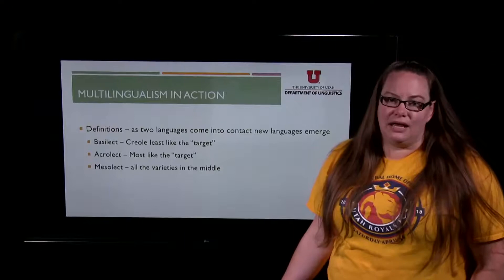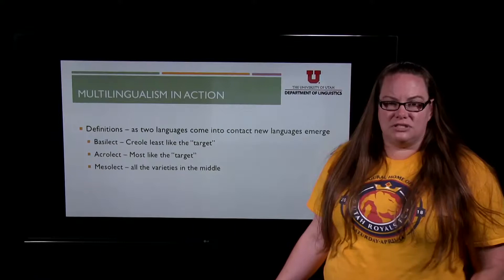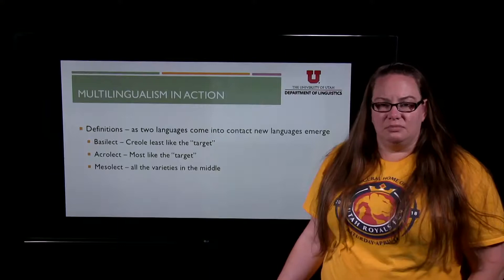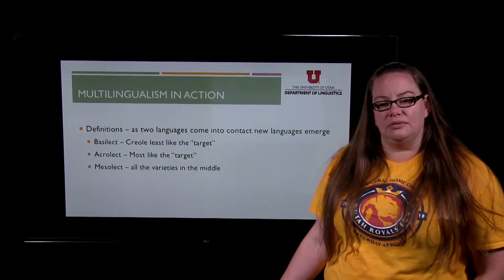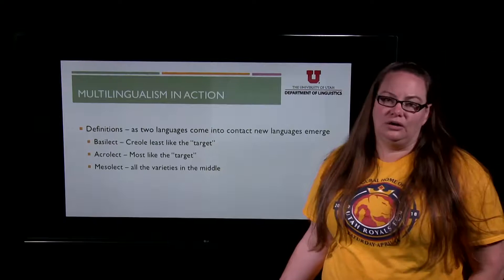I have a few definitions we haven't talked about yet. I want to go through these as we talk about what it means to be multilingual and to have languages come into contact with each other. As two languages come in contact, we talked about pidgin and creole. I want to talk about three terms that our Kirkpatrick book uses — basilect, acrolect, and mesolect — so I want to give a definition to those.